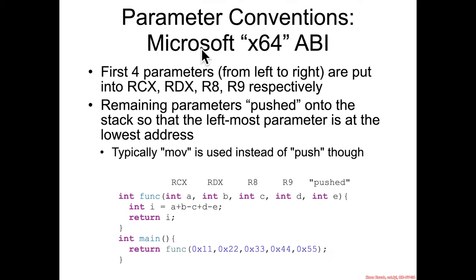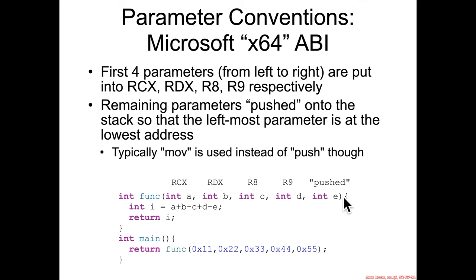In the Microsoft X64 ABI, the first four parameters from left to right are put into RCX, RDX, R8, and R9 respectively. We already saw this in the 'too many parameters' example — the value of A goes into RCX, B into RDX, C into R8, D into R9. Any parameters past that are pushed onto the stack so that the leftmost parameter is at the lowest address — basically pushed in reverse order, or more typically moved onto the stack using move instructions.